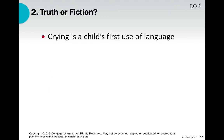Truth or fiction: crying is a child's first use of language. Pause and think about it. The answer is actually fiction — crying is pre-linguistic. It is a form of communication and technically conveys feelings, but from a strict technical definition it doesn't fully qualify as language. For instance, the property of displacement — thinking about past or future — isn't really present in crying. The textbook says it's fiction, though you could argue it either way.